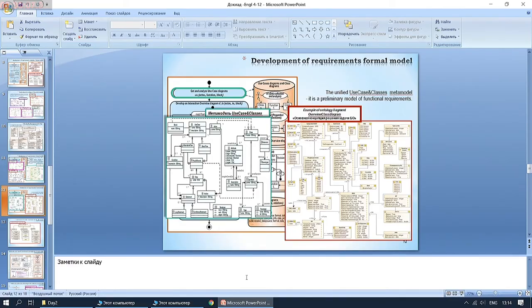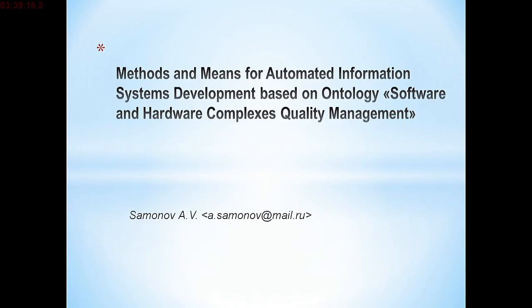Audience member: Could you please tell us, you showed a diagram with critical events analysis — what do you mean by critical events? Is it the same thing as critical path in planning or something different? Speaker: I didn't show such things in my presentation. Audience: It was on one of the last slides, bottom right corner. Speaker: That appears to be a diagram of classes. You can search for it through context search.